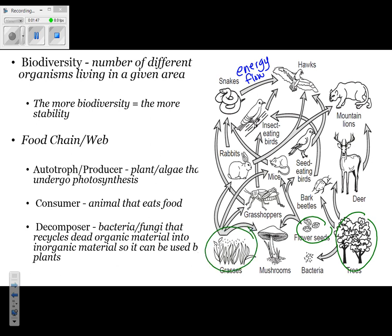Next we have consumers. Consumers are animals that eat food — actually, a consumer is anything that needs to ingest food. That includes all animals, but also mushrooms and bacteria. More specifically, a herbivore is something that eats plants, and a carnivore is a meat eater.